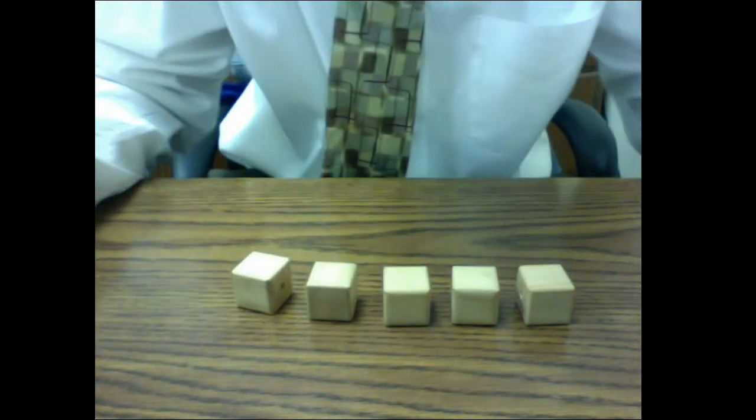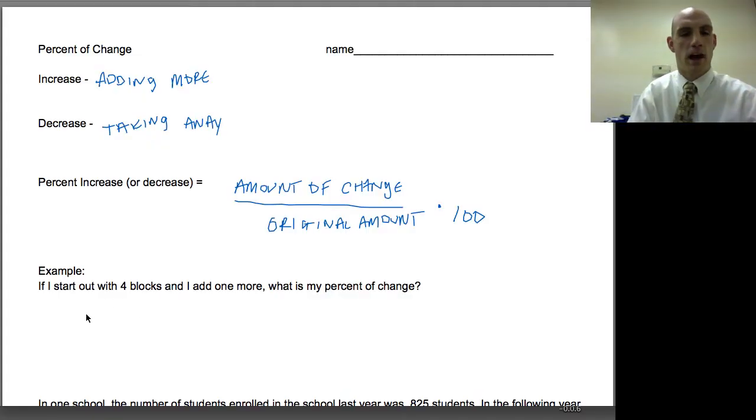I started out with four blocks. My original amount would be that four blocks and my amount of increase was one block. Well, one out of four is 0.25, which is 25 percent. It was a 25 percent increase because I added more.